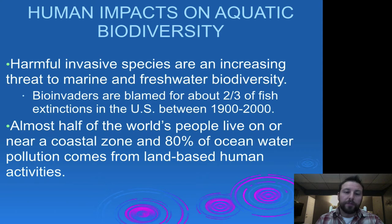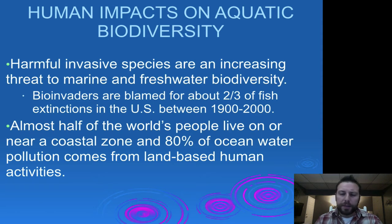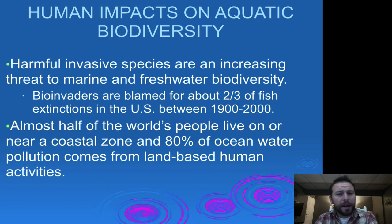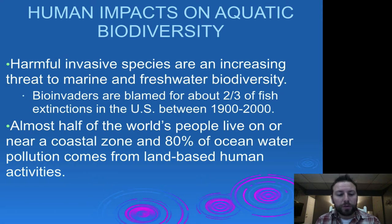Invasive species are definitely increasing threats to our marine and freshwater biodiversity. Species you've studied in class, such as the water flea and the zebra mussel, are blamed for about two-thirds of the fish extinctions that happened in the U.S. within the last century or two. Almost half of the world's people live on or near coastal zones, and 80% of ocean water pollution comes from land-based human activities.